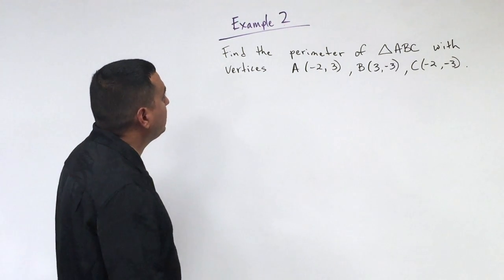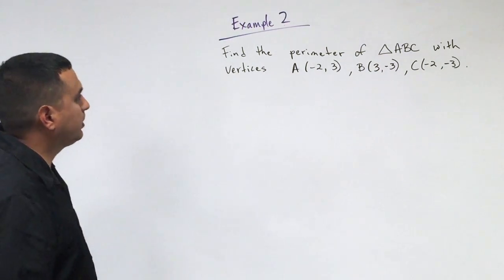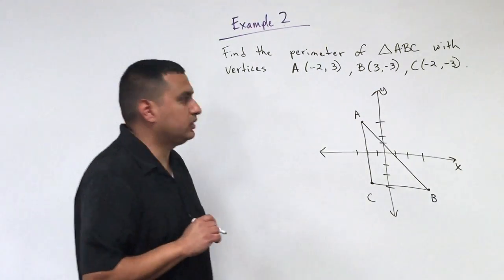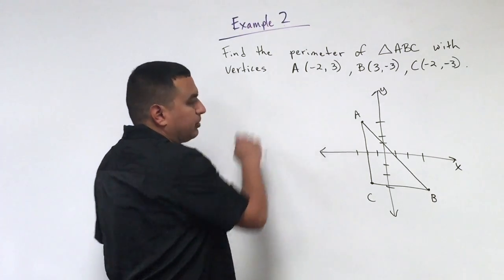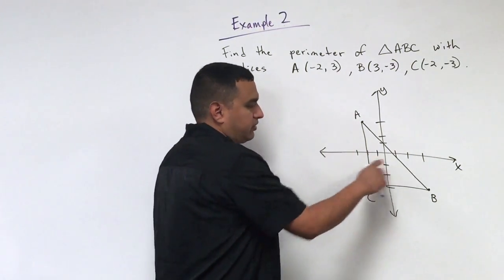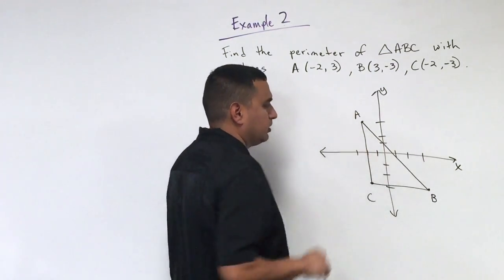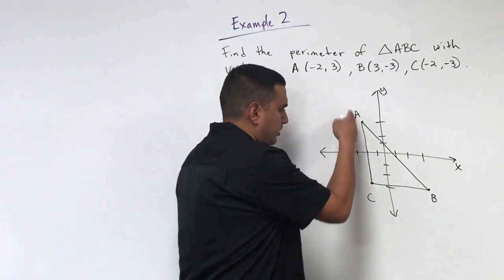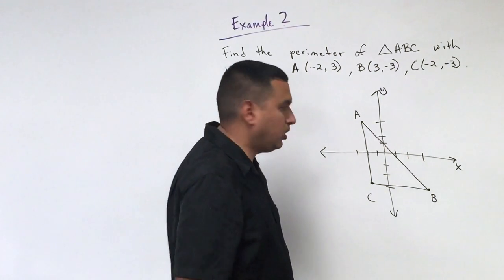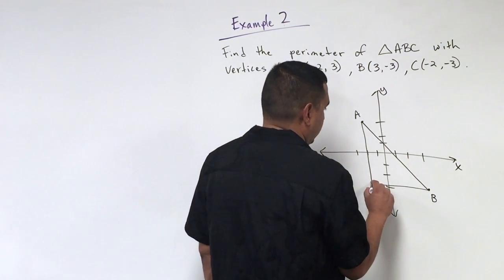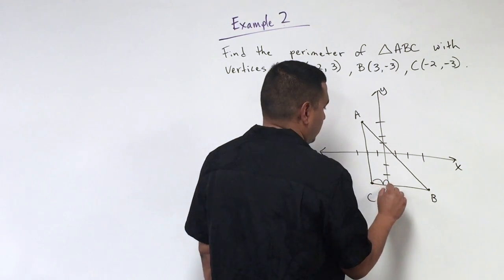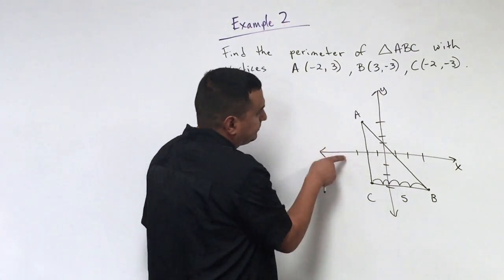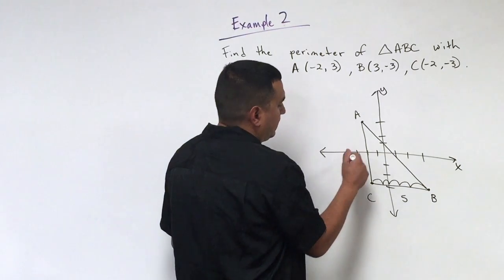All right, so example two now says that we want to find the perimeter of this triangle ABC with the vertices ABC here. So the first thing we have to do is let's graph this. All right, so now here's my points. Now to find the perimeter, remember I need to know the distance between each of the points, the length of these three sides here. Now these two, the AC and segment BC, those are easy because they're vertical and horizontal lines. So all you have to do on this particular one is just count them. So I would have a distance of five on this one. So this would be five units long. Going this way, if I'm at three down to negative three, that gives me a length of six.